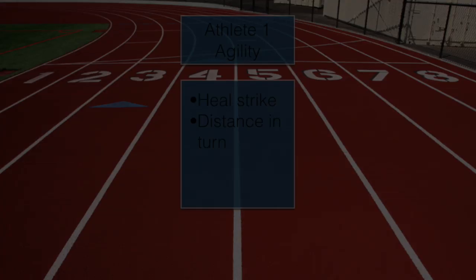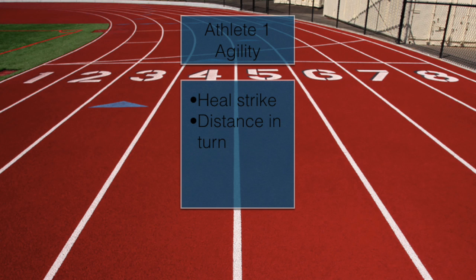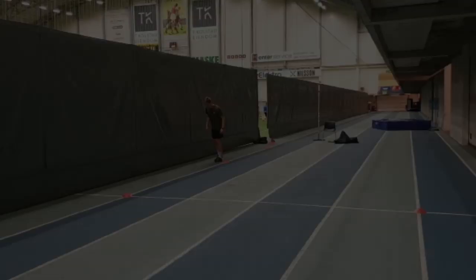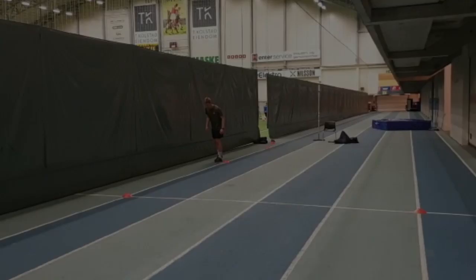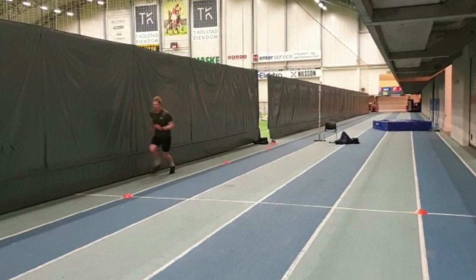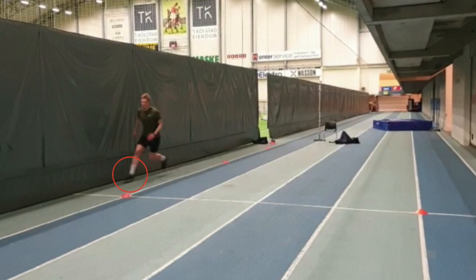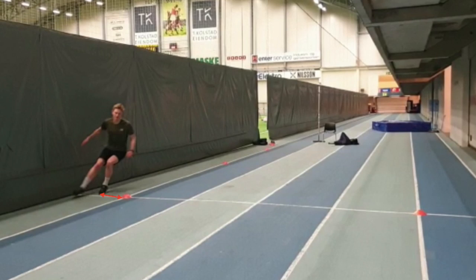For athlete A, we performed the L-test to assess agility, primarily analyzing the heel strike and the tightness of the turn. Especially two things occur: when the athlete is decelerating, it is not with a firm heel strike — it is more in a neutral position instead of slightly dorsiflexed. He also has a large turn and is far away from the cone, as shown in still pictures 2 and 3.